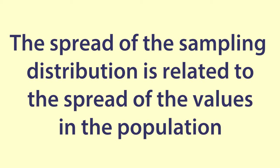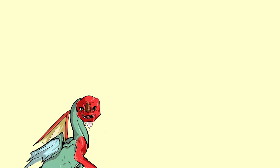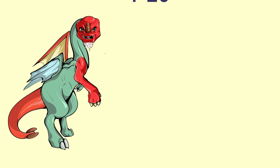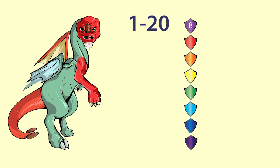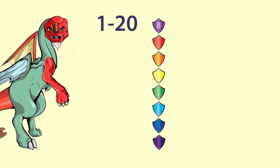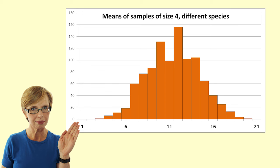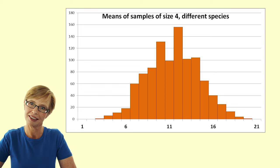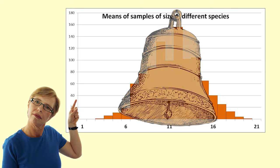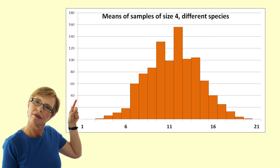Aspect three: The spread of the sampling distribution is related to the spread of the values in the population. Say a different dragon population had a spread of strengths of 1 to 20 instead of 1 to 8. You would expect the spread of the sample means to be greater. Here is a graph showing the spread of sample means from samples of size 4 from a different population of dragons. These dragons have strengths evenly spread between 1 and 20. You can see that there is still the bell shape but for these dragons most of the sample means lie between 6 and 16.